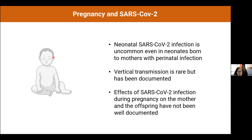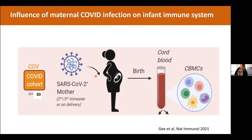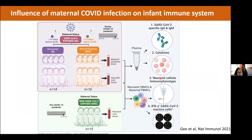Like children in general, neonates are not particularly susceptible to SARS-CoV-2. Even neonates born to mothers infected during pregnancy or perinatally tend not to catch it. Vertical transmission is rare but documented in case reports. The effects of SARS-CoV-2 infection in pregnancy on the offspring have not been well documented, which led us to our study monitoring pregnant women who experienced infection in the second or third trimester and analyzing the effect on the infant.